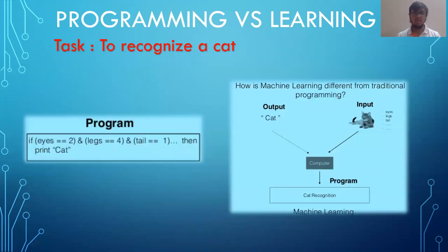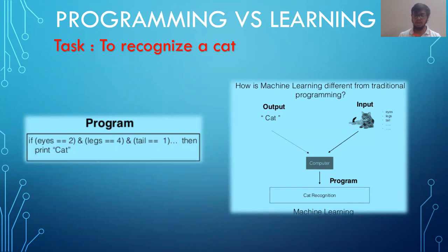Now, how can we make a machine learn, and how is it different from traditional programming? You have learned SQL and Python — that is called machine programming, but we are not into machine programming. In machine learning, a machine learns like a new kid born into this world — by being given examples. If you want to make a newborn baby understand how a cat looks, you would not tell it: if you find two eyes, four legs, and one tail, then print 'cat' — that is traditional programming.